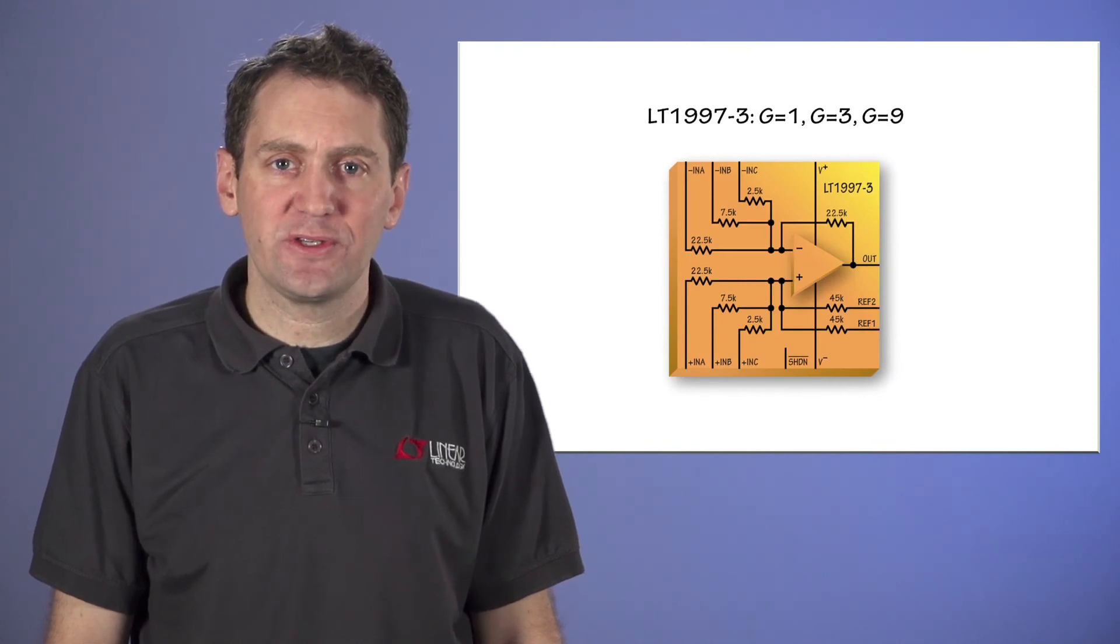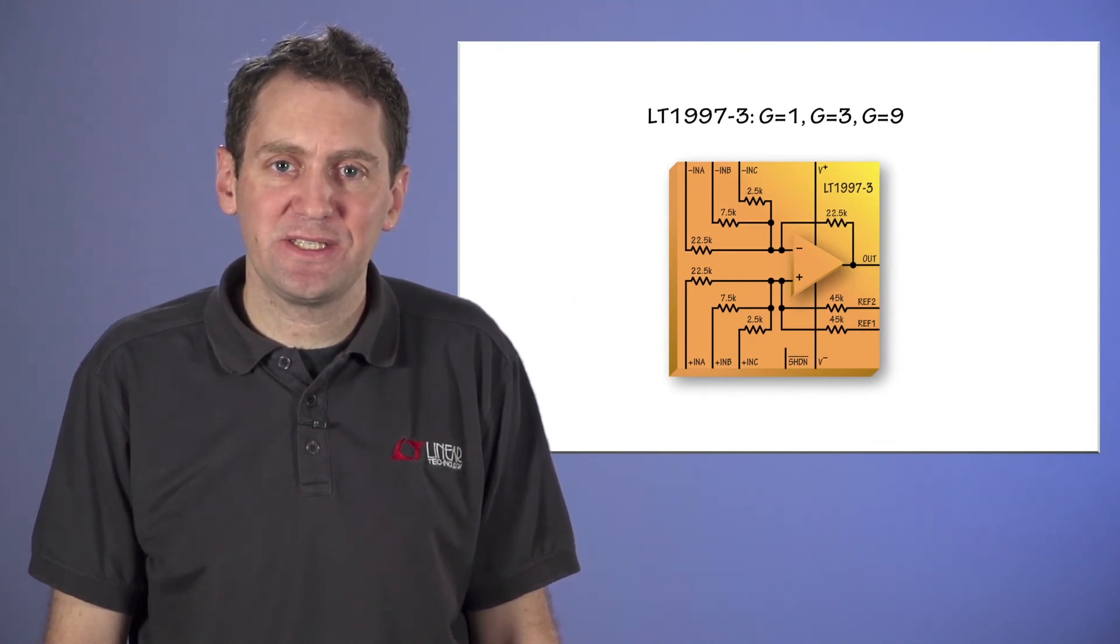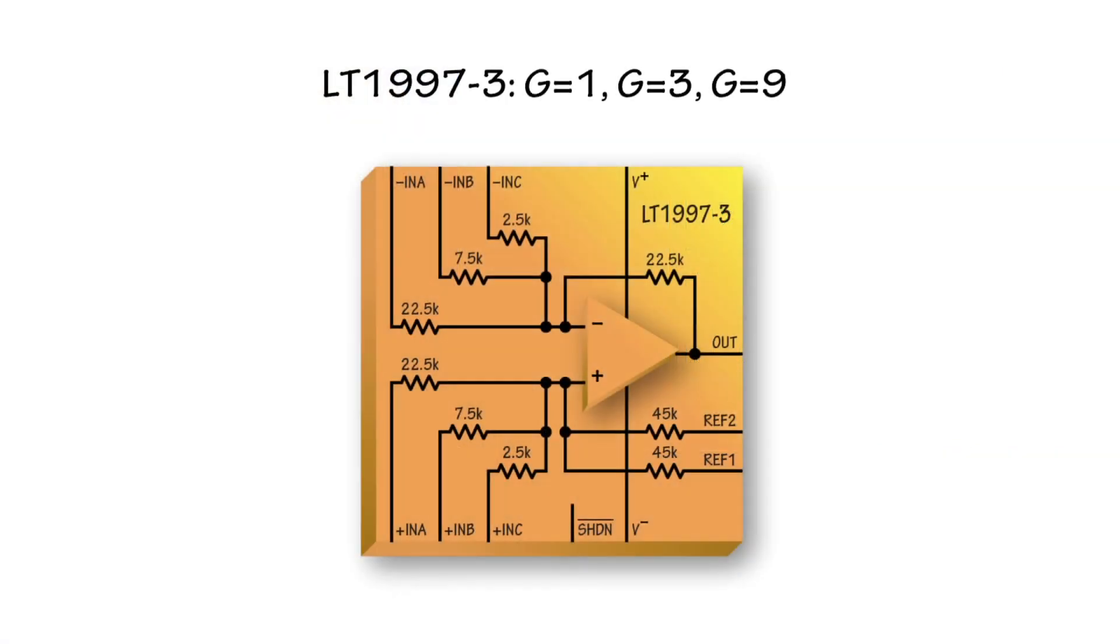The final version of this family is the LT1997-3. It is designed to be very general purpose, with resistors built in for ratios of 1, 3, and 9.